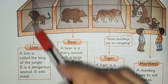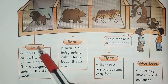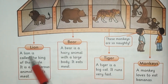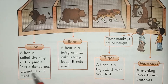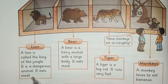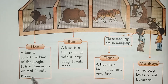A lion is called the king of the jungle. It is a dangerous animal. It eats meat. Sheer ko jungle ka badshah kaha jata hai. Yeh khatarnaak janwar hai. Yeh gosht khaata hai.